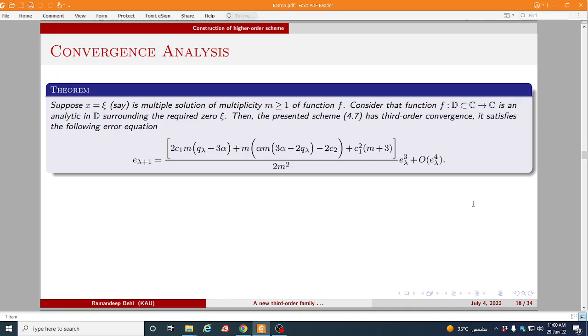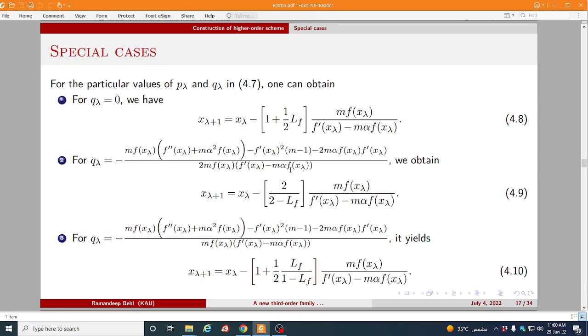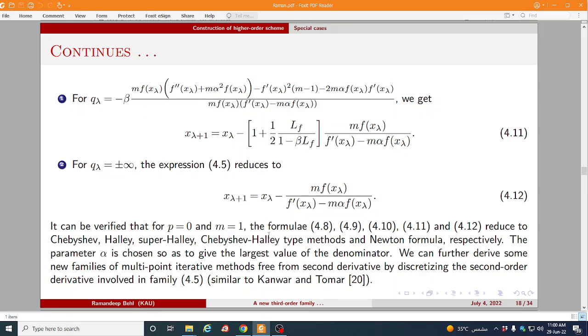The convergence theorem: suppose x is equal to ξ is a multiple solution for the multiplicity m greater than equal to 1, we consider f function as an analytic in surrounding the required zero ξ, then our scheme 4.7 will satisfy this error equation theorem. These are the some special cases of our scheme where when we choose the value of p(λ) is equal to 0 or this one and this one, so these are new iterative methods.